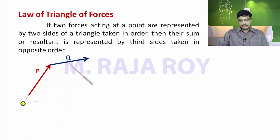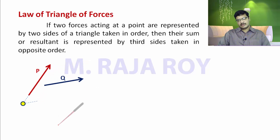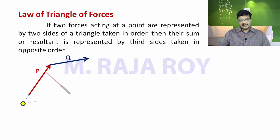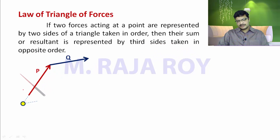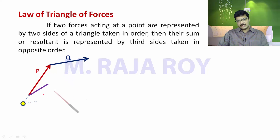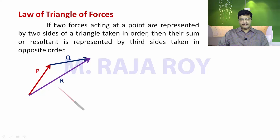Now, transfer force Q to the end of force P. These two forces are now represented by two sides of the triangle in the same order — only one direction followed. For the third side, according to the definition, the third side is taken in the opposite order, so you draw it in the opposite direction. That is the resultant. So we started with P, then Q, then the resultant.